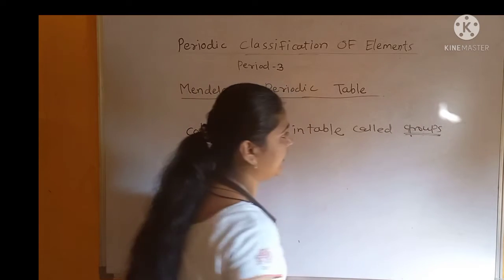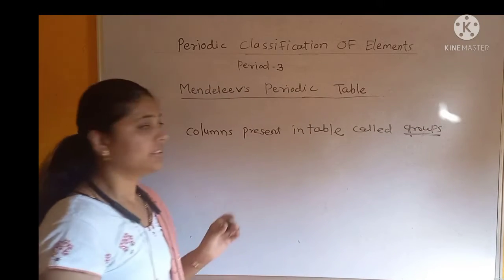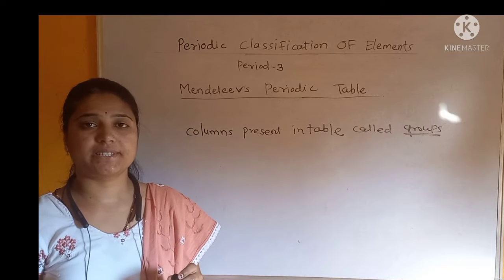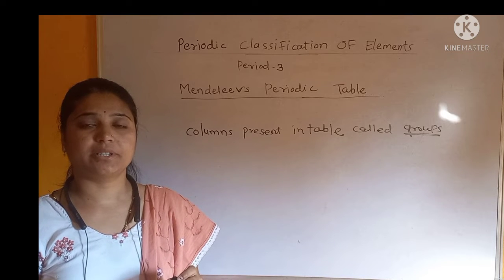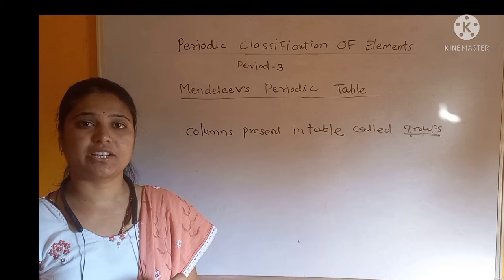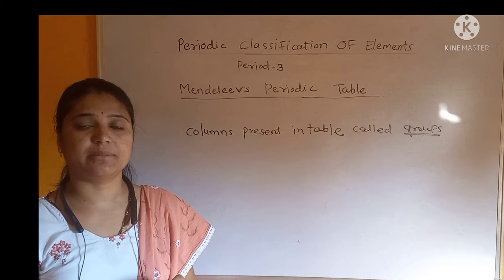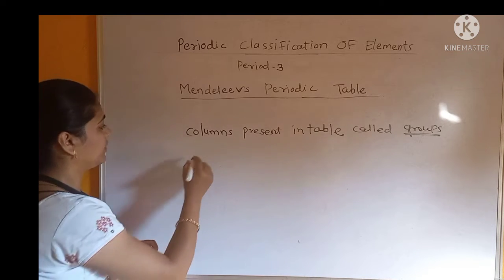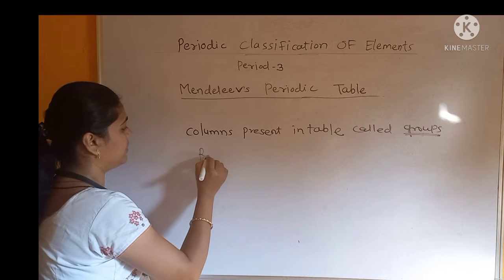Groups are very important. The rows present in the periodic table are given a special name, and that name is called periods.